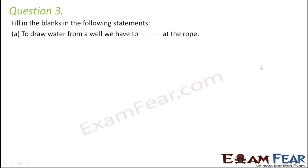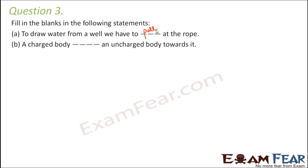Question number three: fill in the blanks. 'To draw water from a well, we have to dash at the rope.' To bring water out from the well, we need to bring the rope towards ourselves. When we apply force to bring an object towards ourselves, that is called a pull. Next: 'A charged body dashes an uncharged body towards it.' A charged body will always attract an uncharged body.